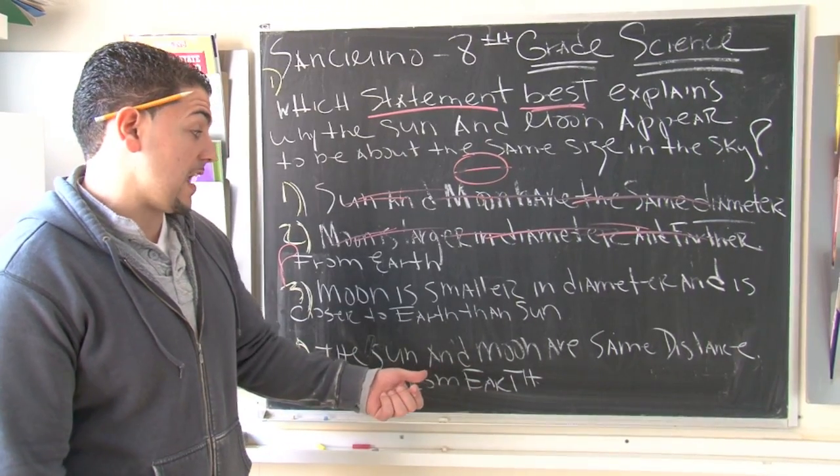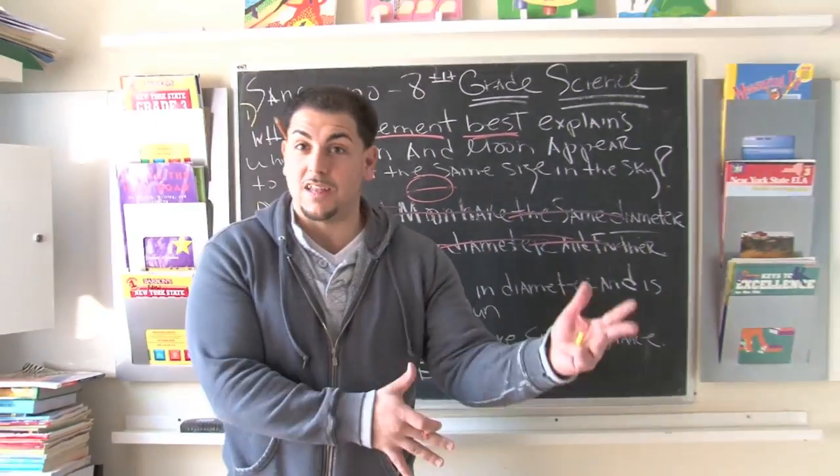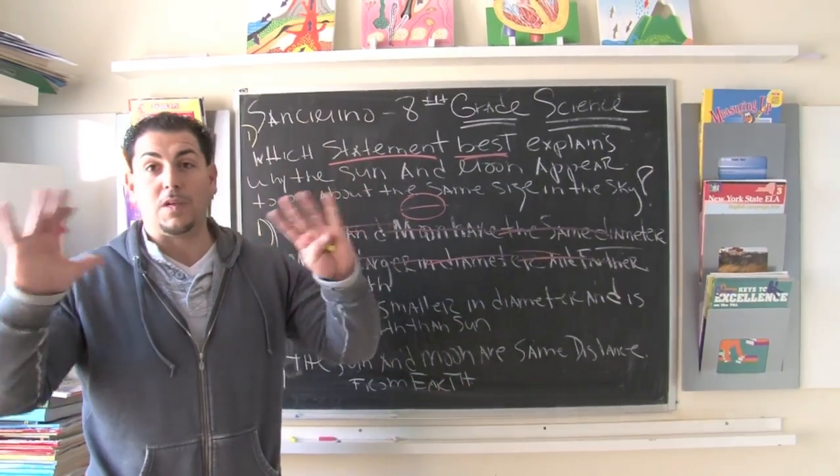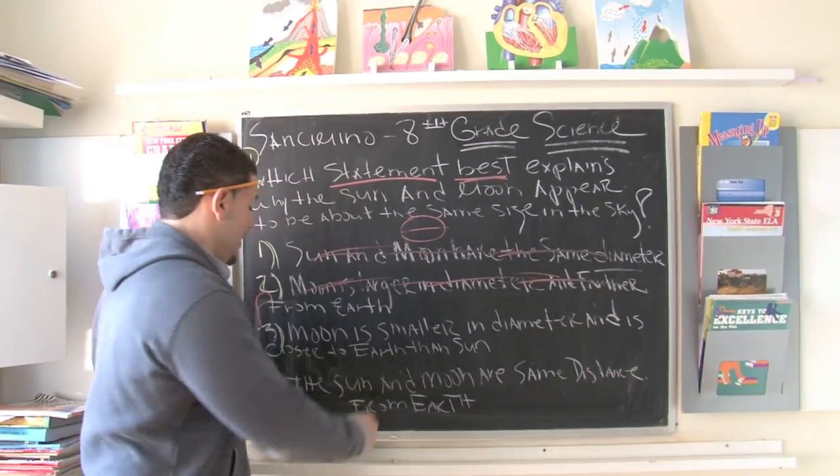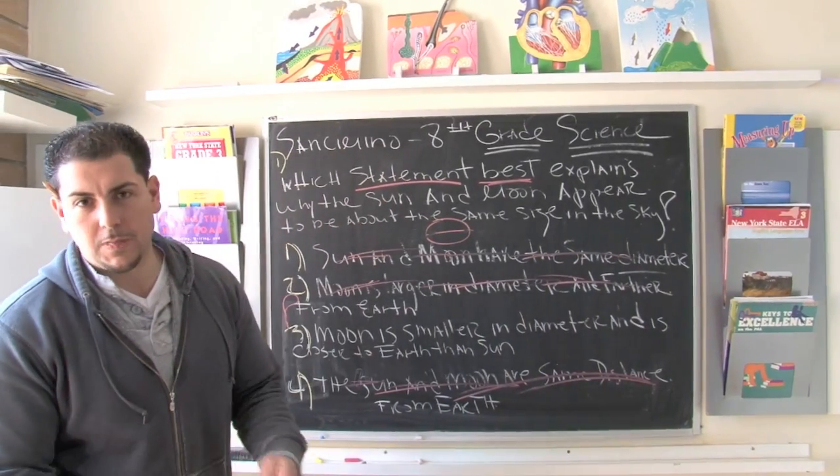The sun and the moon are the same distance from the earth. Well, if that was true, we'd all be floating around in the air because the gravitational force would just make us, I mean, it would just be ridiculous. So, no way. So, again, same idea, same concept always being applied.